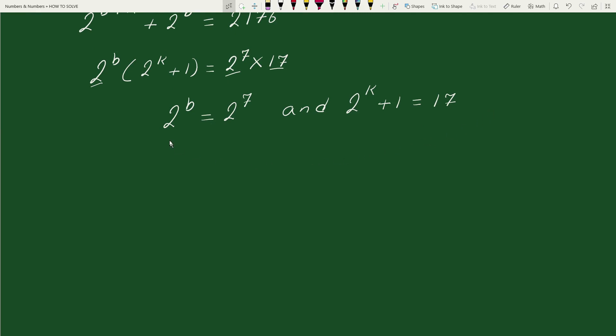Now here since bases are equal therefore b equals to 7. Here transposing 1 to right hand side we can write this equation as 2 to the power k equals to 17 minus 1. This equals to 2 to the power k equals to 16.